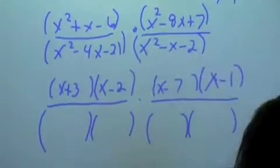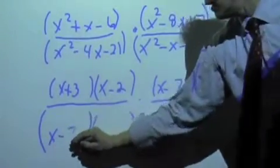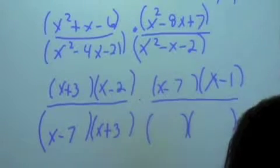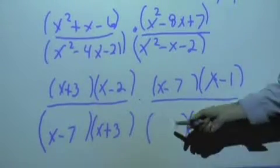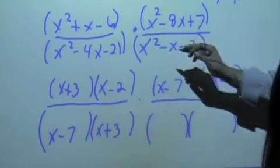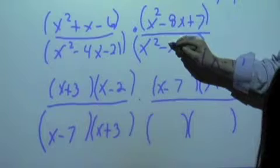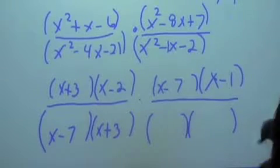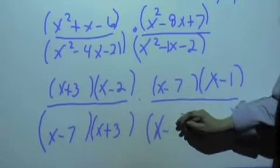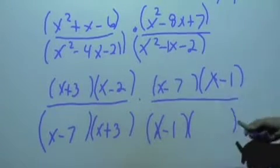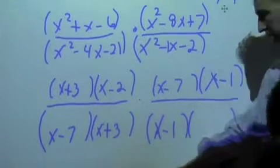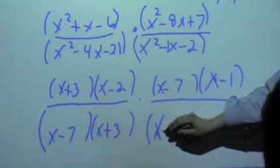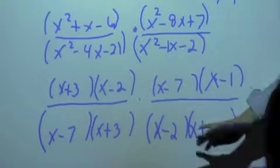How about X squared minus 4X minus 21? Lorena? X minus 7 and X plus 3. Good job. Because negative 7 plus 3 is negative 4, and negative 7 times 3 is negative 21. What about X squared minus X minus 2? Jason? X minus 2, X plus 1. That sounds better. X minus 2, X plus 1. You got that clearly, Sebastian?